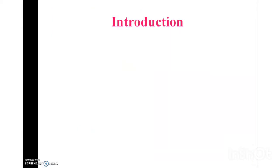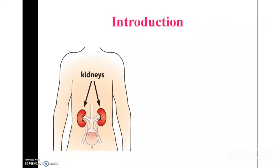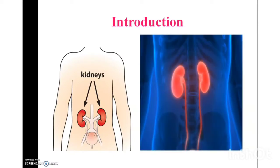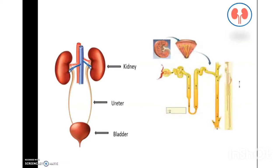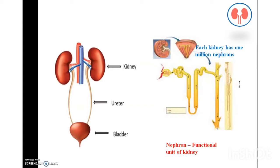Introduction about nephritis. As human beings, we have a pair of bean-shaped organs called kidneys, which are located in the posterior part of the abdomen. Their function is to form urine and to pass urine to the ureters and bladder for excretion. Each kidney has 1 million nephrons. The nephron is described as the functional unit of the kidney.